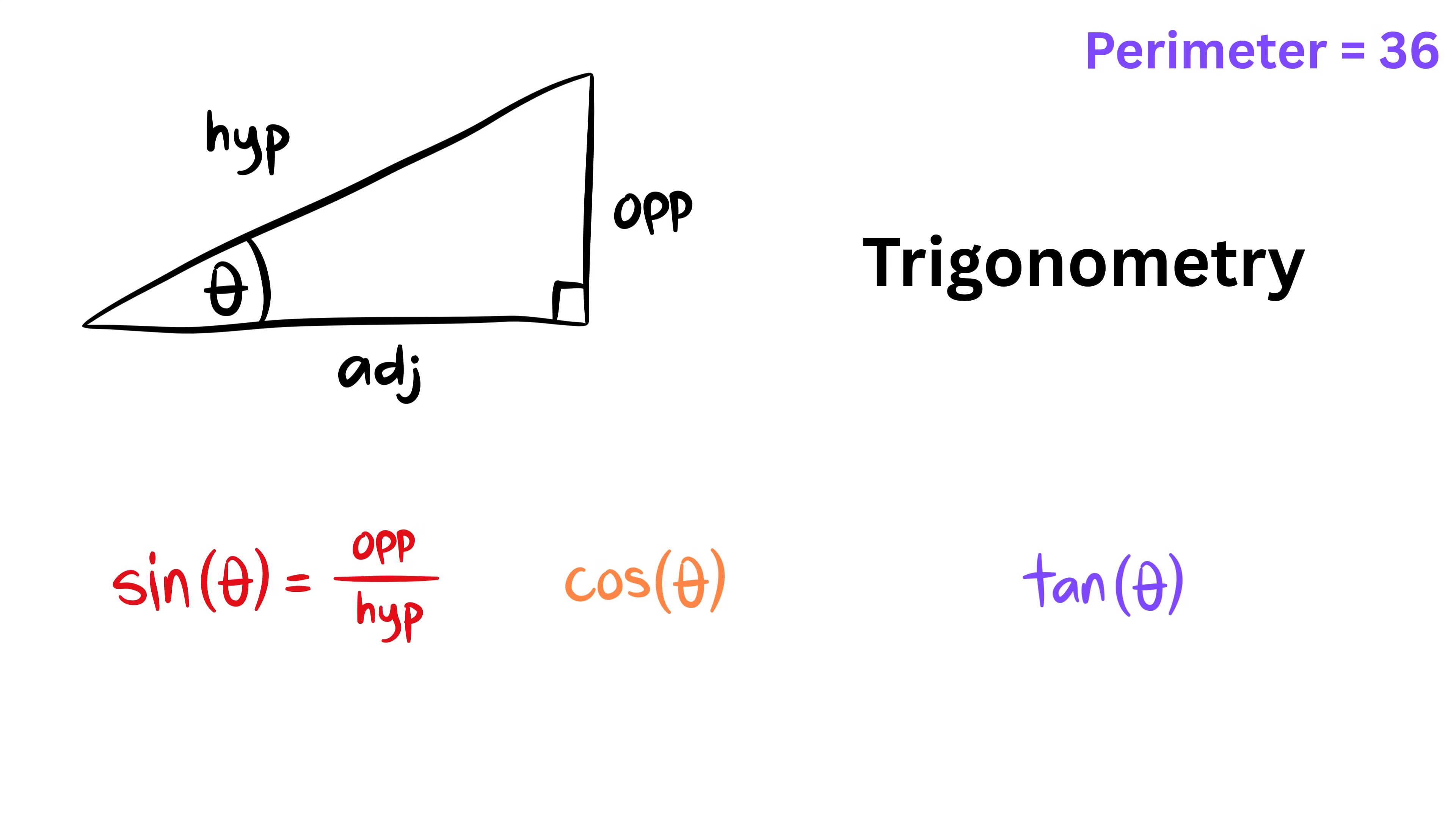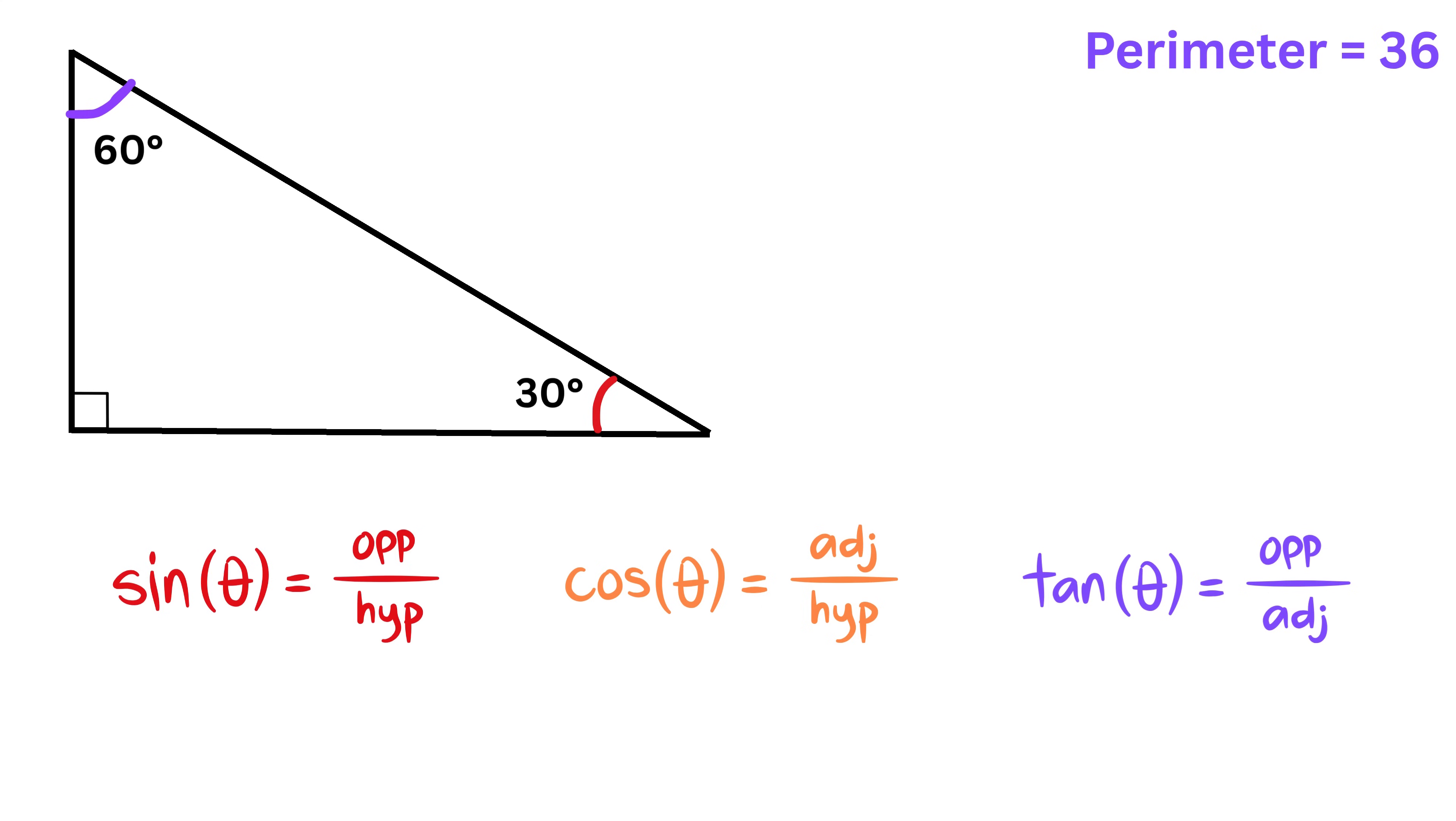Then the tangent of this angle theta is the length of the side opposite the angle divided by the length of the side adjacent to the angle.